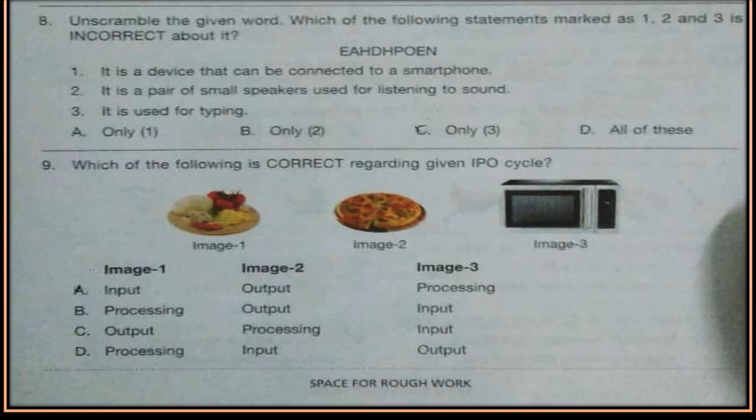Question 8. Unscramble the given word. Which of the following statements marked as 1, 2 and 3 is incorrect about it? First, it is a device that can be connected to a smartphone. Second, it is a pair of small speakers used for listening to sound. Third, it is used for typing. Now which are the incorrect statements? Choose your correct option.